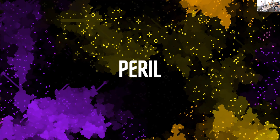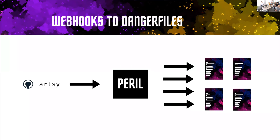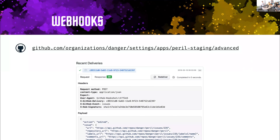One way to think about it is: you have a GitHub org, it is attached to a Peril, and Peril arbitrarily evaluates your Danger files for you. That is how I initially built it. Every single message from GitHub comes through as a webhook that contains an action and an event — for example, the event type is 'issues' and the action is 'edited', and it sends you the full JSON of the issue.